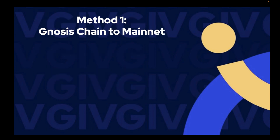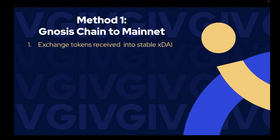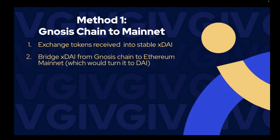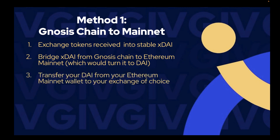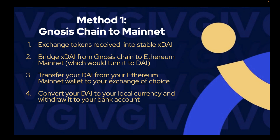For the first method I'll show you how to transfer tokens from Gnosis chain to mainnet. This involves four steps: Step 1, exchange tokens received into stable XDAI. Step 2, bridge my XDAI from Gnosis chain to Ethereum mainnet, which turns it into DAI. Step 3, transfer DAI from Ethereum mainnet to your exchange of choice. And Step 4, convert it to your local currency and withdraw to your local bank account.